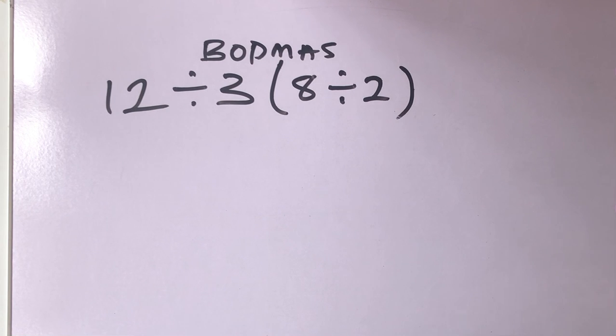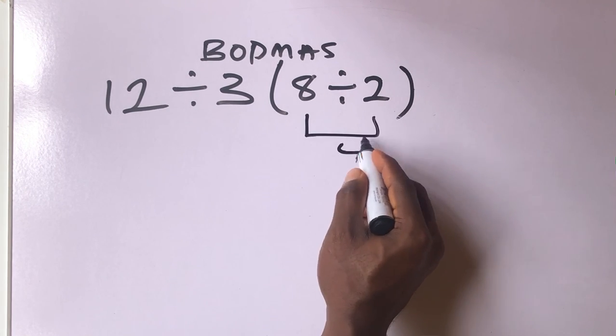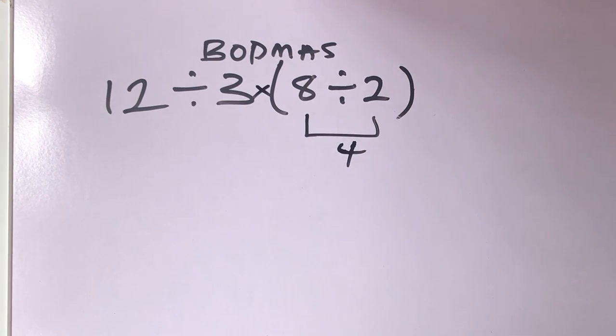Now the correct answer will be like this: 8 divided by 2 will give us 4. Remember there is multiplication here. If there is a number close to brackets, it means you are going to times.